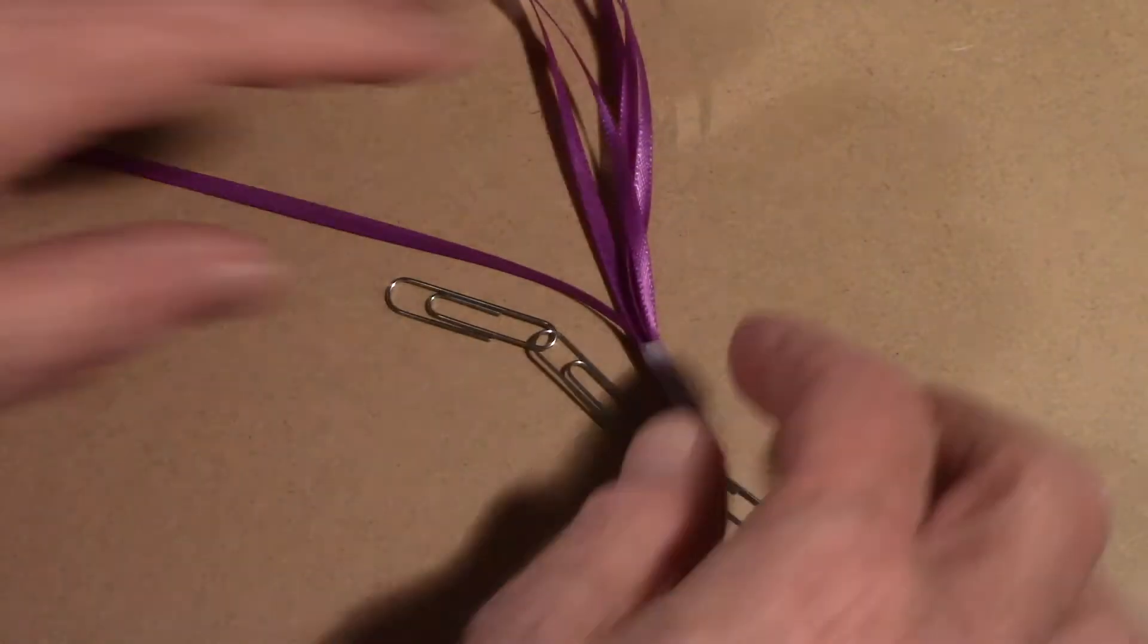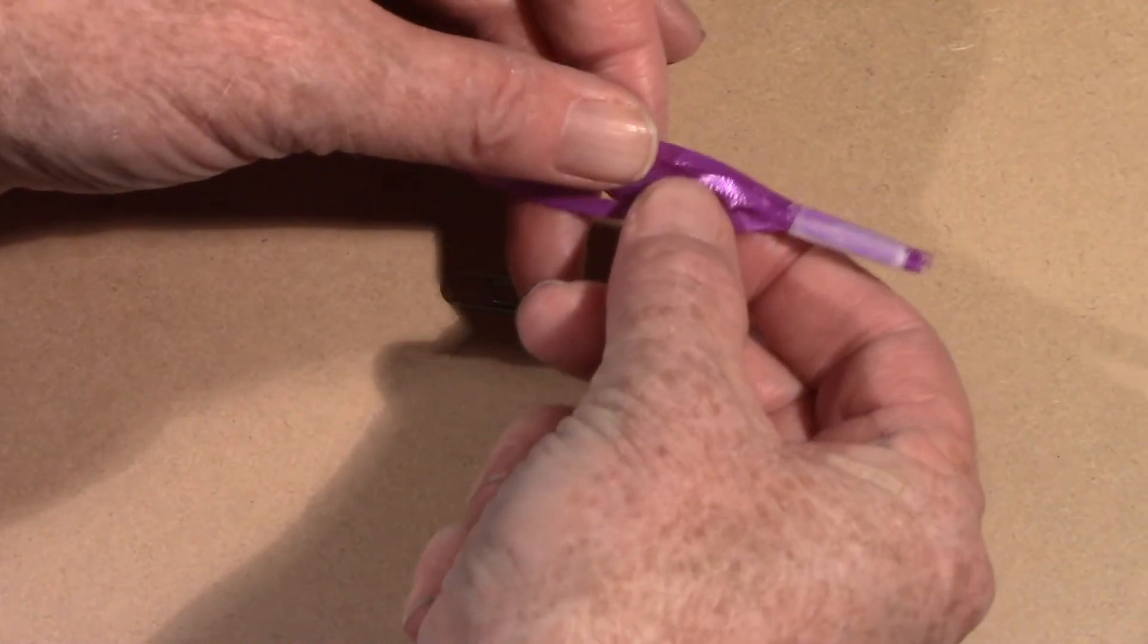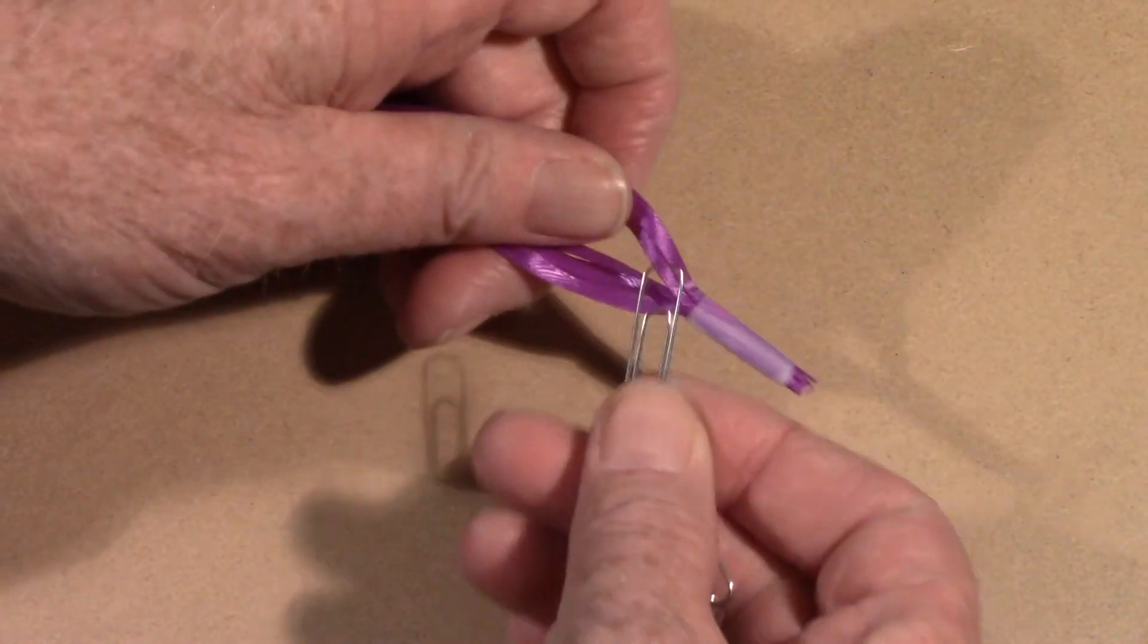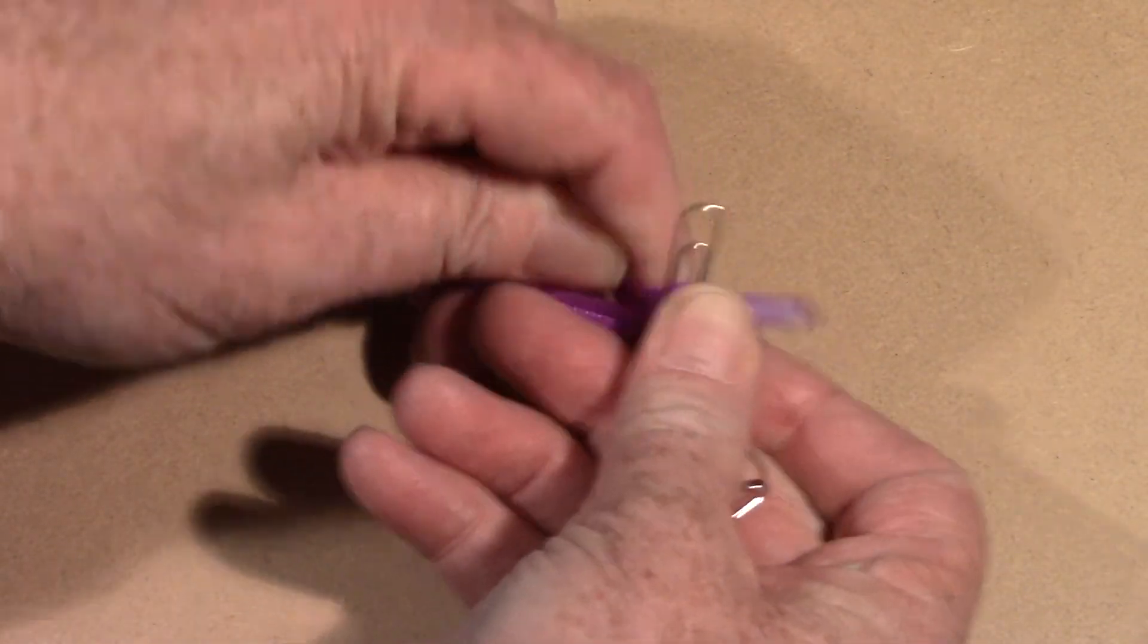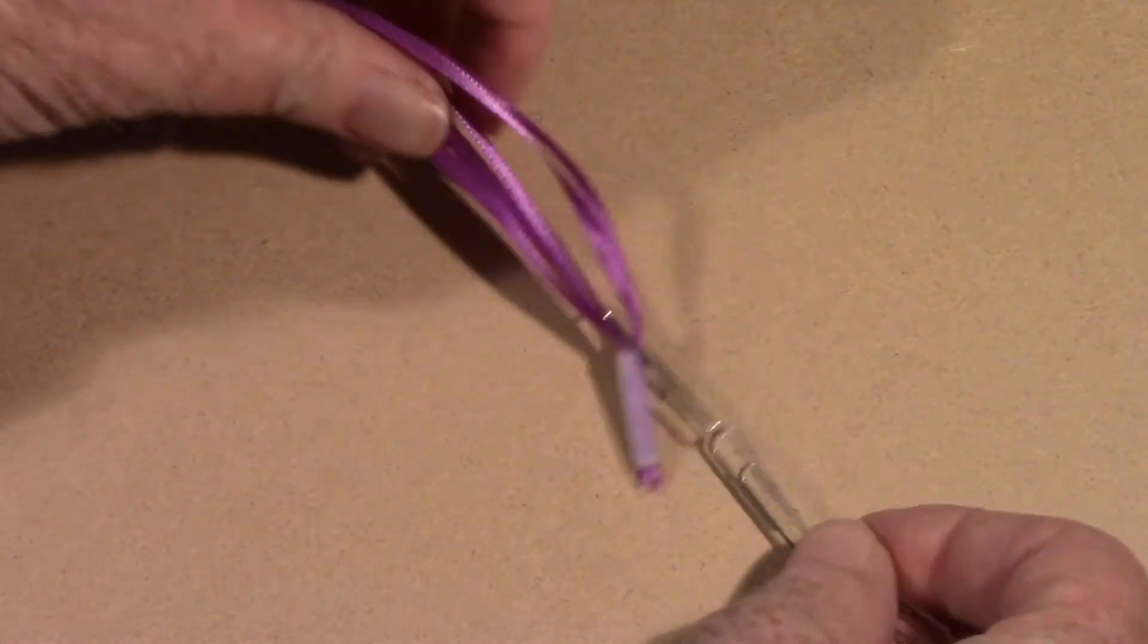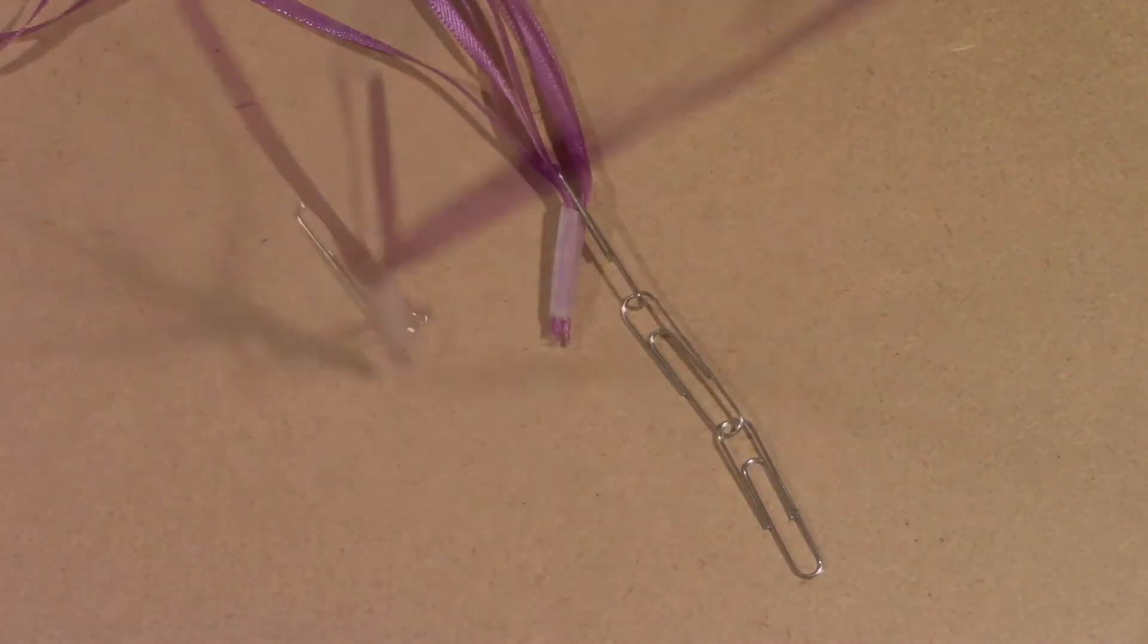Now take your parachute, put it next to where the paper clips are, open it up so three of the ribbons are on one side, and three on the other, and just hook the end paper clip into just three of those. Now you're ready to take flight. Now go up and down a little bit to make sure it opens just right, and then let it go.